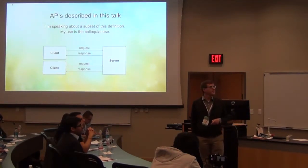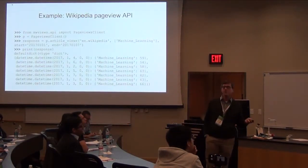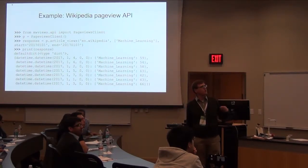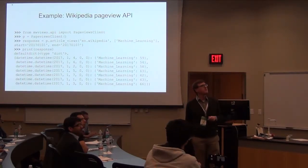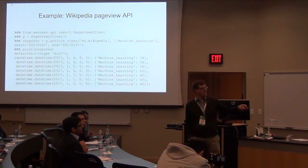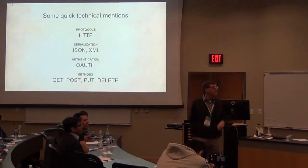That's the kind of definition I'm going to use for this talk. And a quick example: here's about four lines of Python code where you can query the Wikipedia page view API and get back data on the topic of machine learning. A surprisingly small number of page views over this January, but this very simple four-line request gets you some interesting data to work with.